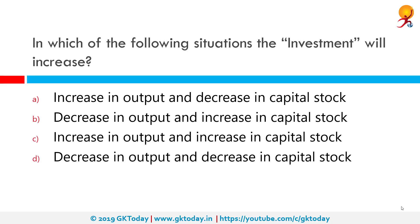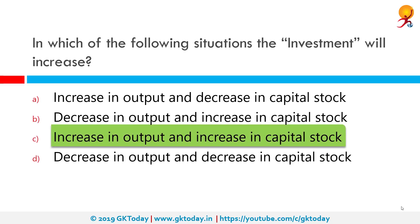In which of the following situations will investment increase? The correct answer is when there is an increase in output and increase in capital stock. Over the years, India has emerged as one of the fastest growing economies in the world and an attractive investment destination driven by economic reforms and a large consumption base. It was the fastest growing major economy in 2017-18 with its GDP growing 7.2% and reaching Rs. 170.95 trillion. It is expected to grow at 7% in 2018-19.